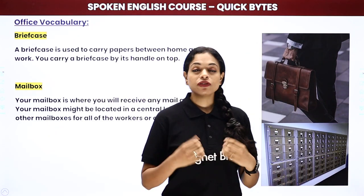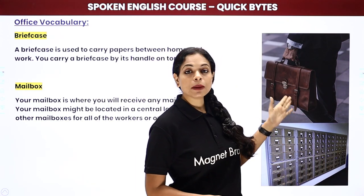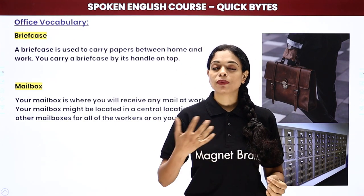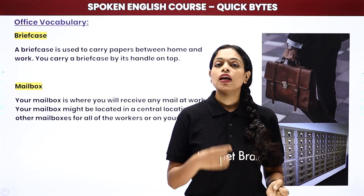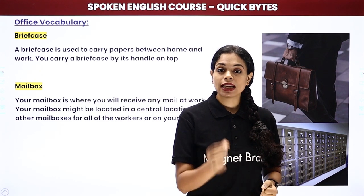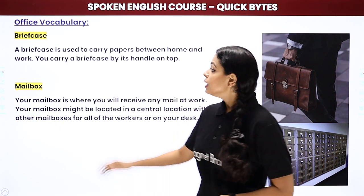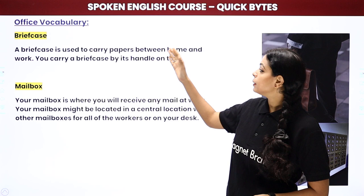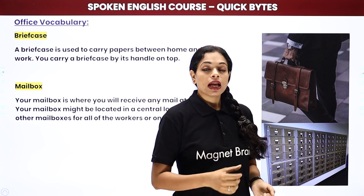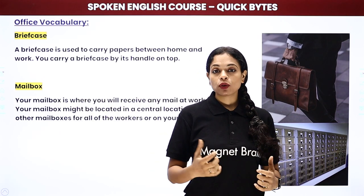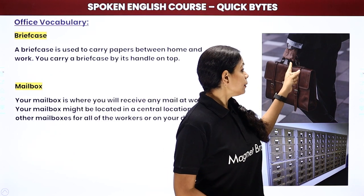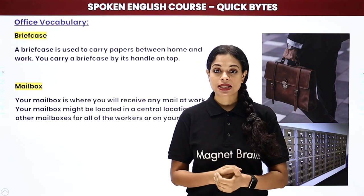Next comes a briefcase. When you go to the office, you usually carry a briefcase or a laptop bag in which you keep your personal items — right from your mobile charger, pen, tiffin box, important files and papers, and your organizer. A briefcase is used to carry papers between home and work and you carry it by its handle on top. Laptop bags are usually sling bags, but when you hold it by a top handle, it's called a briefcase.